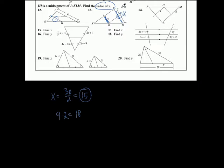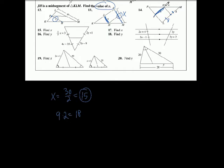The next one is a little more confusing. JH is the midsegment. There are tick marks here and here — meaning this segment is 8 and this is 8, so the whole side is 16. The midsegment X is half of this. Half of 16 is 8. So x equals 8.